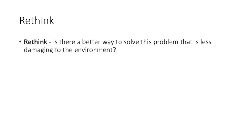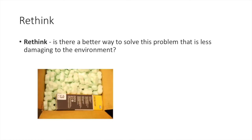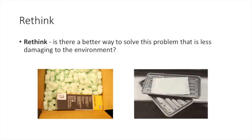The next R is Rethink, which challenges designers to think of a better way to solve issues around packaging or new products. Here's an example of someone packaging a product for delivery — you can see it's ineffective, it's been pushed to one corner, and there's far too much material being used. The next example is a black tray used for packaging meat products. They're effective in packaging but are next to impossible to recycle, so they're very bad for the environment and tend to just go to landfill.